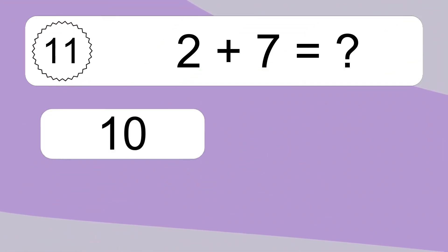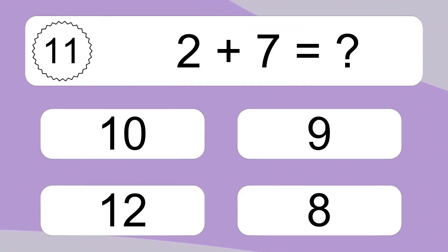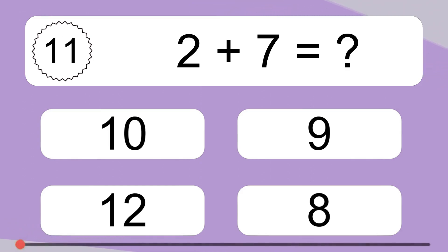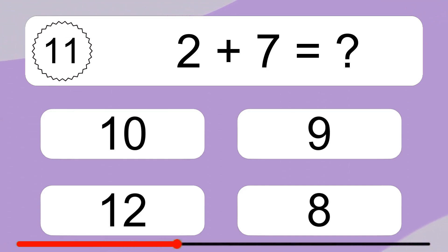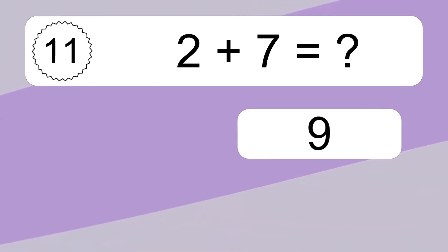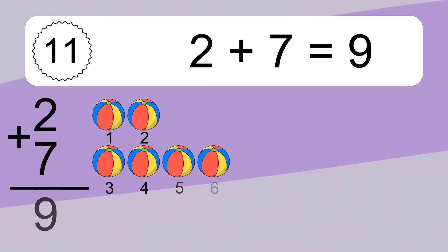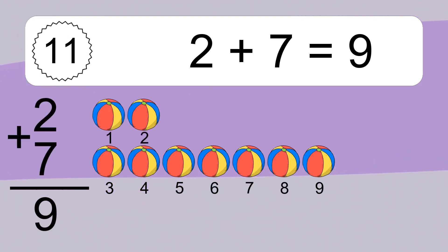2 plus 7 equals what? 2 plus 7 equals 9.